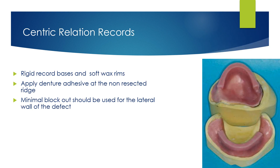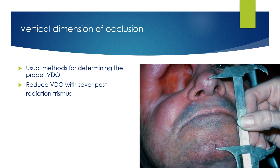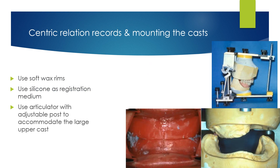Centric relation can be registered by using rigid record bases and soft wax rims. It is important to apply denture adhesive on the non-resected side to secure retention. Minimal block-out should be used for the lateral wall of the defect. Vertical dimension of occlusion can be registered using the usual methods for determining the proper VDO. Reducing the VDO may be done with severe post-radiation trismus patients. Centric relation records are difficult to obtain due to the instability of record bases at the defect side; therefore, it is preferred to use soft wax rims and silicone as a registration material.